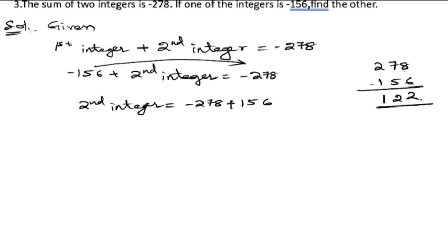So this is 122. But the sign for the larger number, the bigger number, is negative, so we will get minus 122.